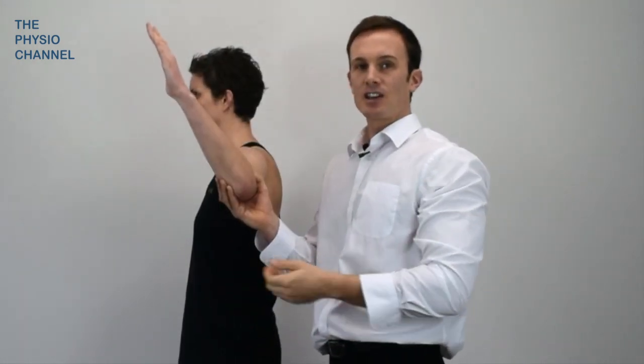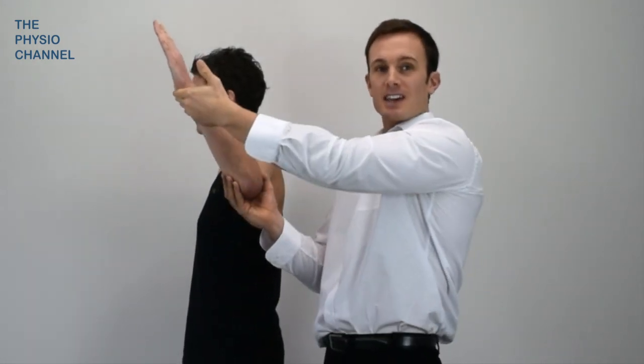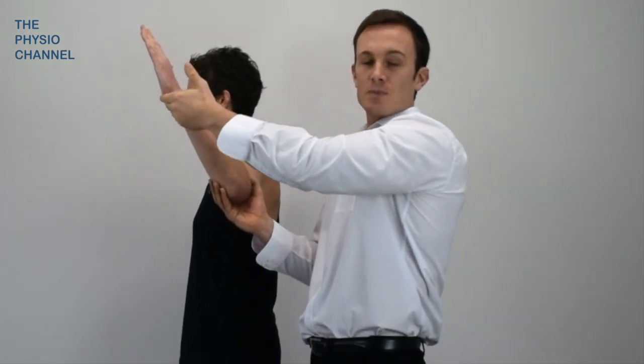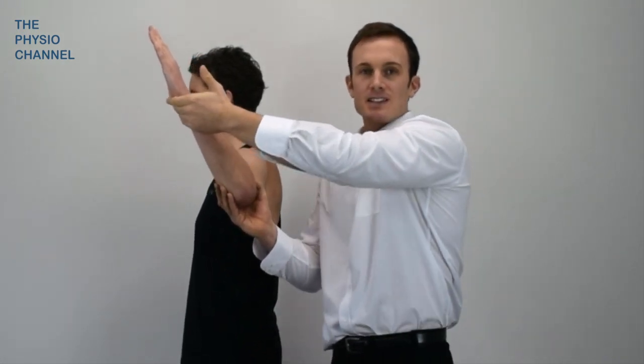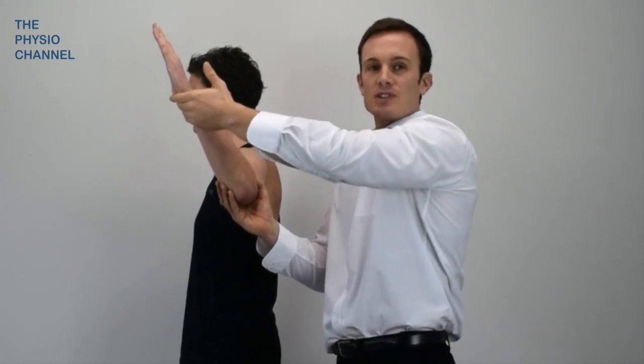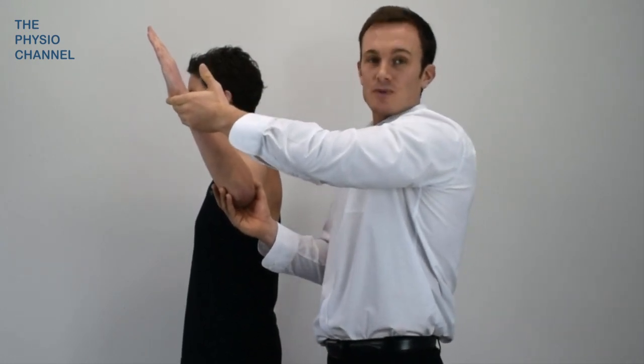Comparatively, internal rotation weakness may indicate an internal impingement of the supraspinatus and infraspinatus tendons between the posterior superior part of the glenoid rim.